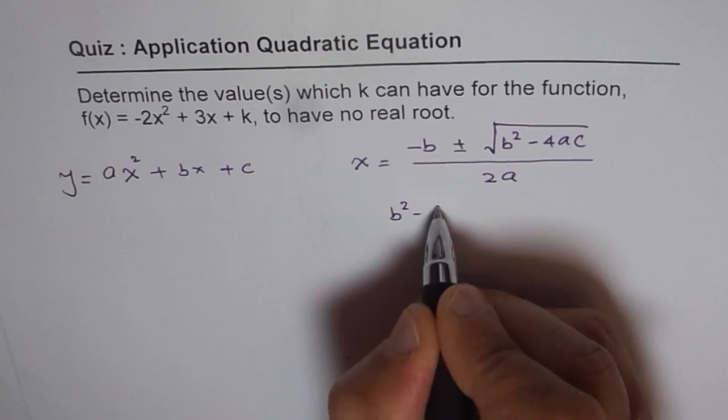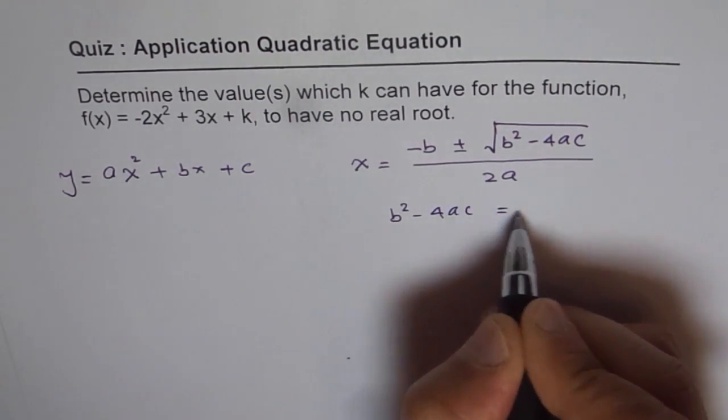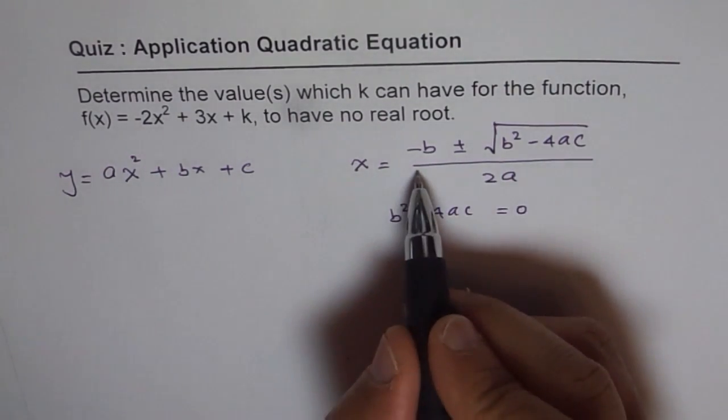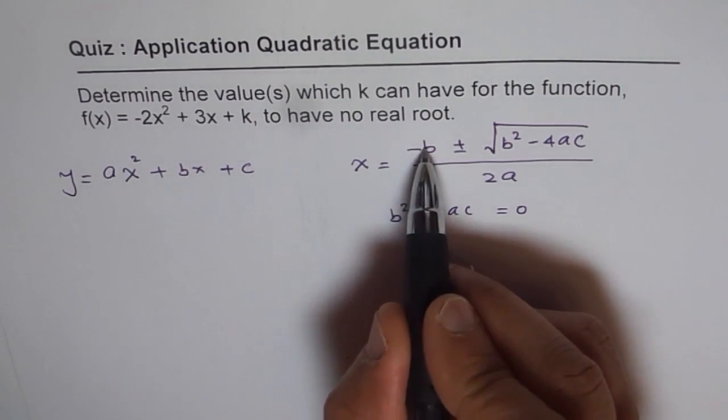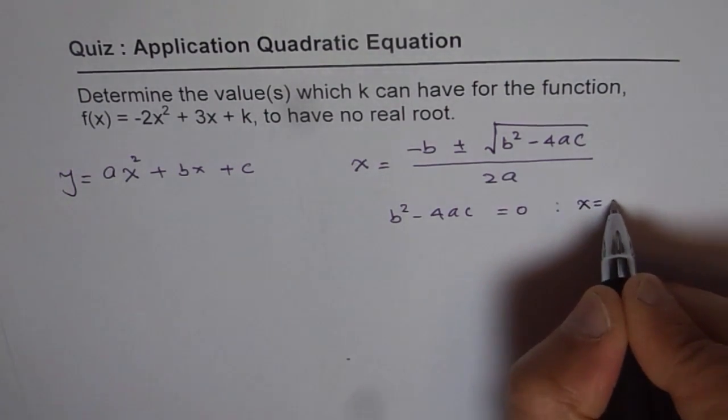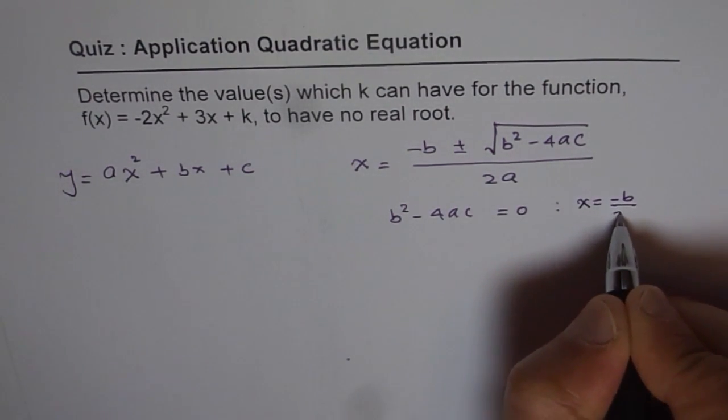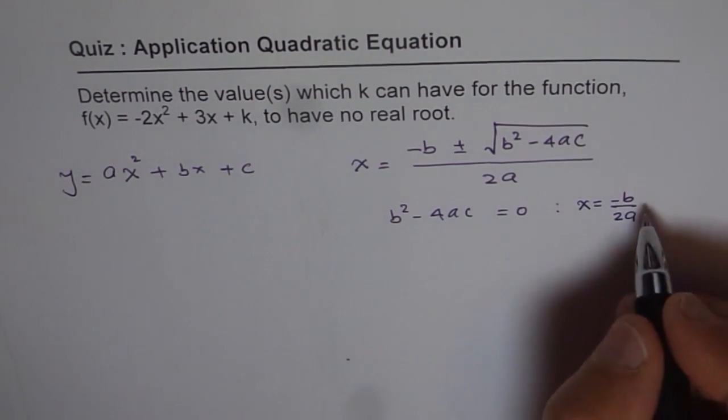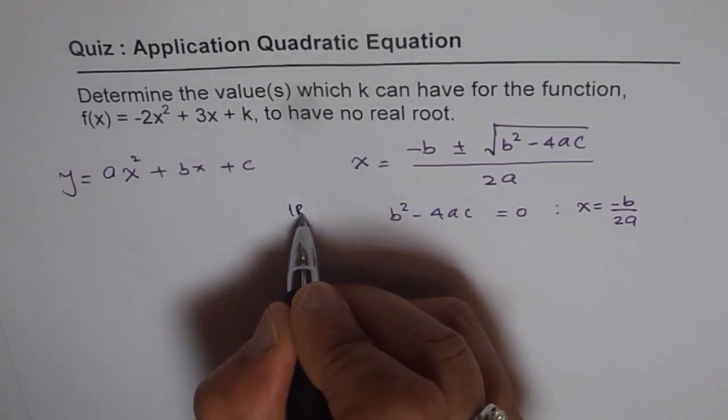If b² - 4ac is equal to 0, then we have only one root which is -b/2a. That is, x = -b/2a, only one real root. That gives us one real root.